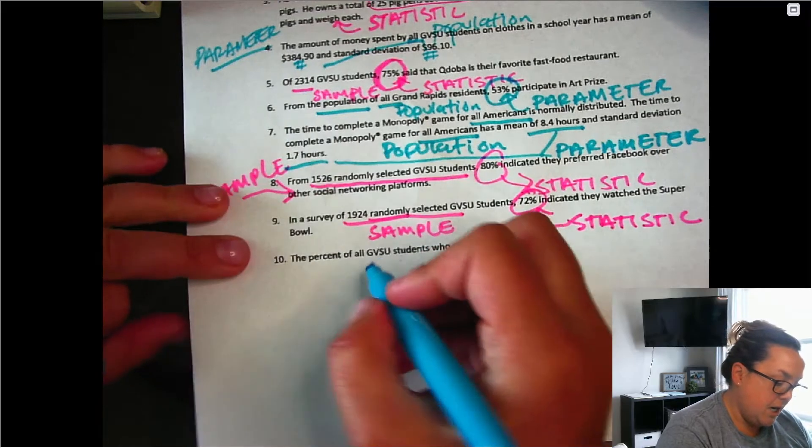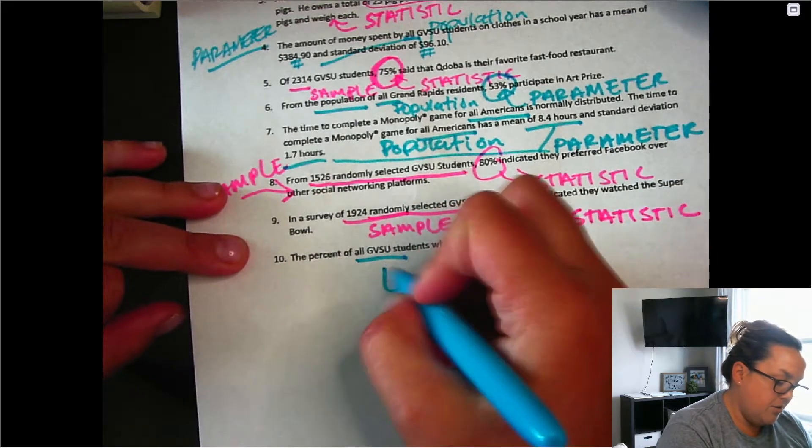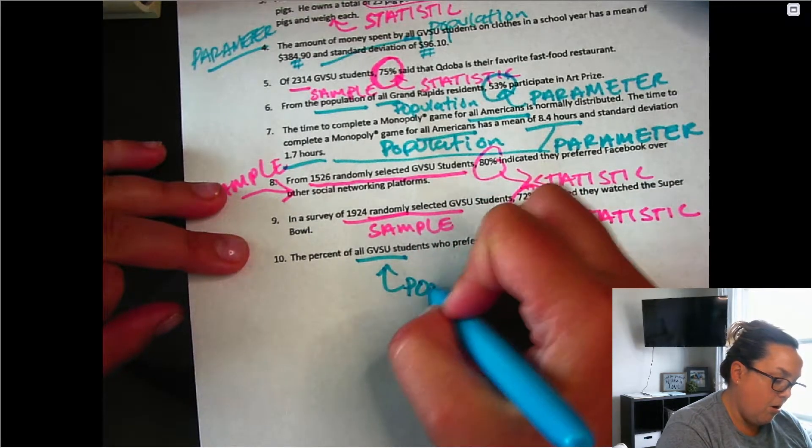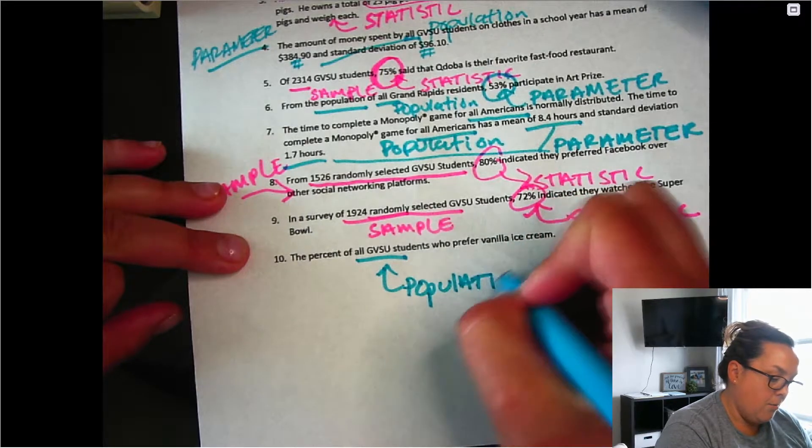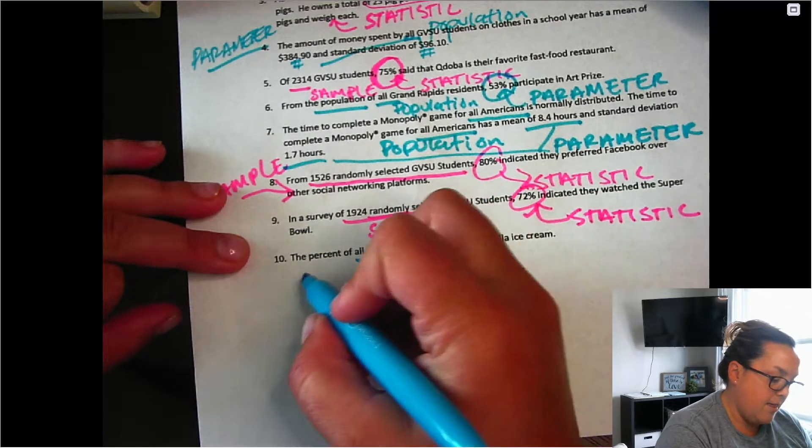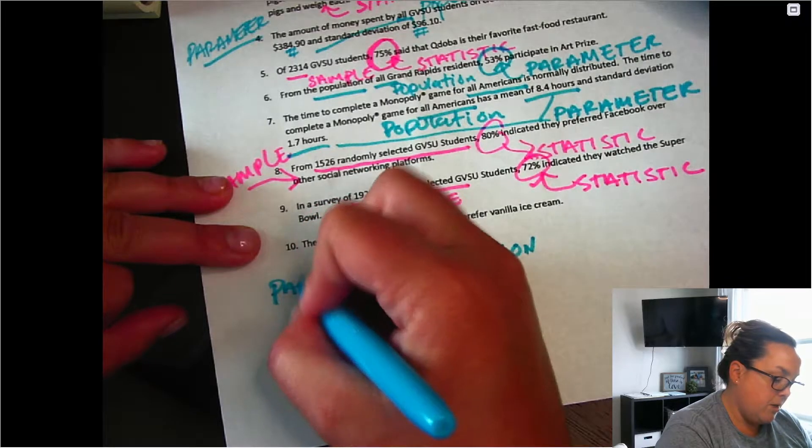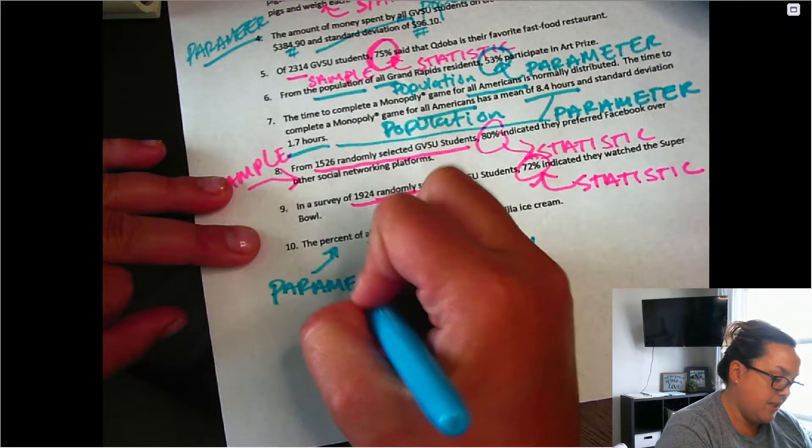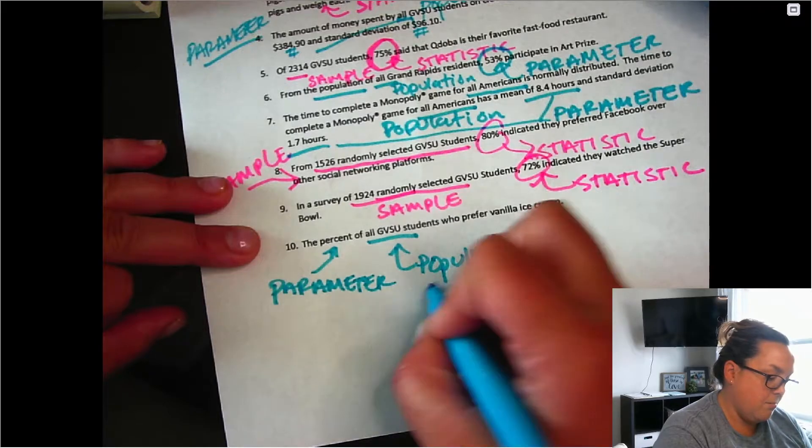And then percent of all GBSU students, because it says the word all, or remember any synonym to that, that percentage that they find is going to be a parameter because it refers to the population.